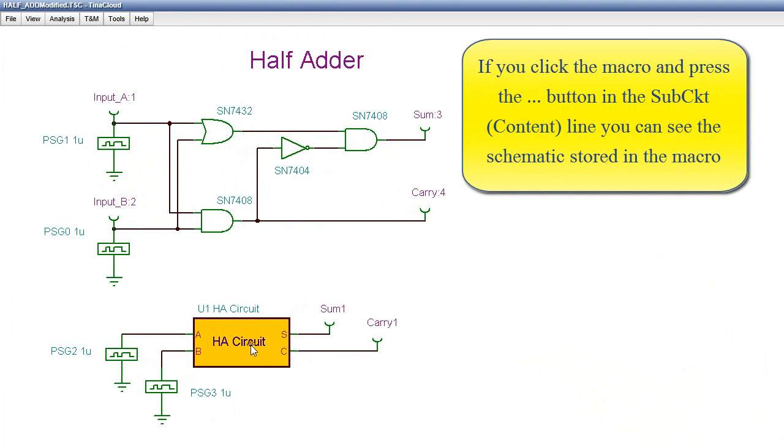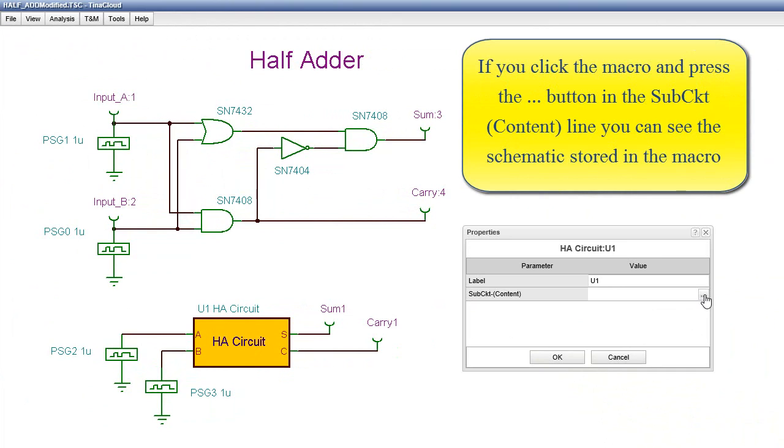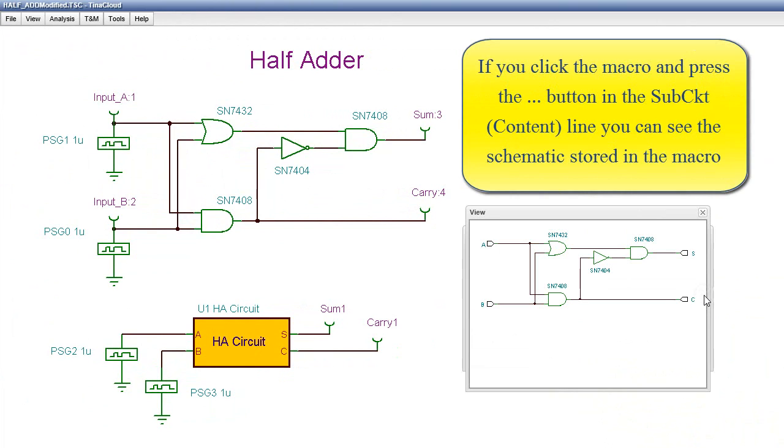If you click the macro and press the three dots button, in the sub-CKT content line, you can see the schematic stored in the macro.